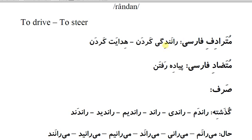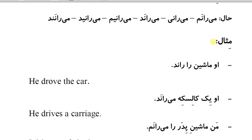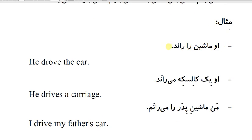Persian synonyms (مترادف فارسی): رانندگی کردن (to drive), هدایت کردن (to guide). Persian antonym (متضاد فارسی): پیاده رفتن (to walk). Example sentences: او ماشین را راند (He/she drove the car). او یک کالسکه می‌راند (He/she was driving a carriage). من ماشین پدر را می‌رانم (I drive my father's car).